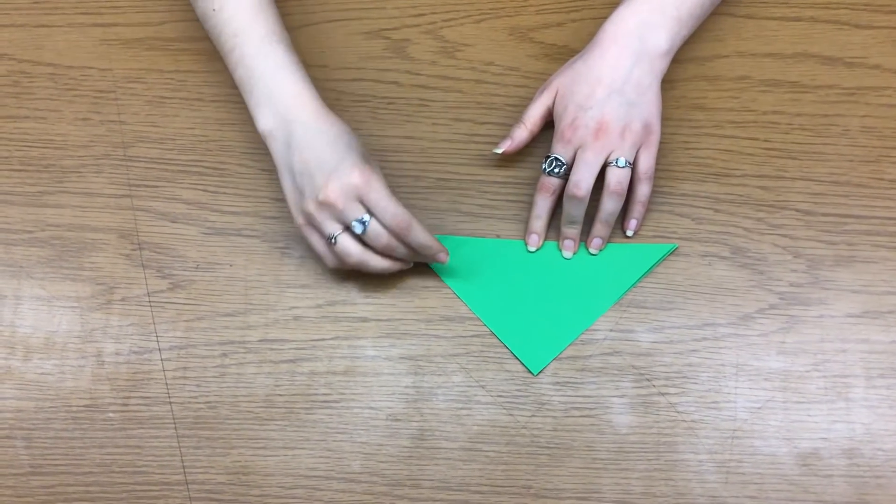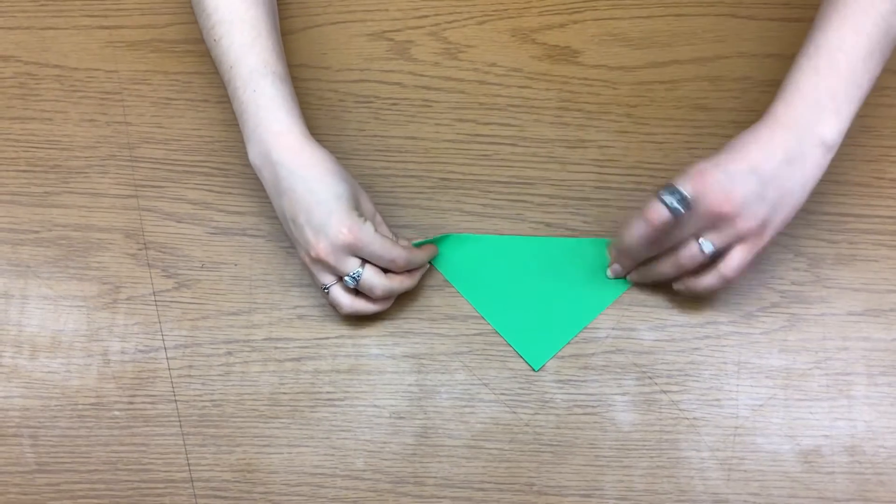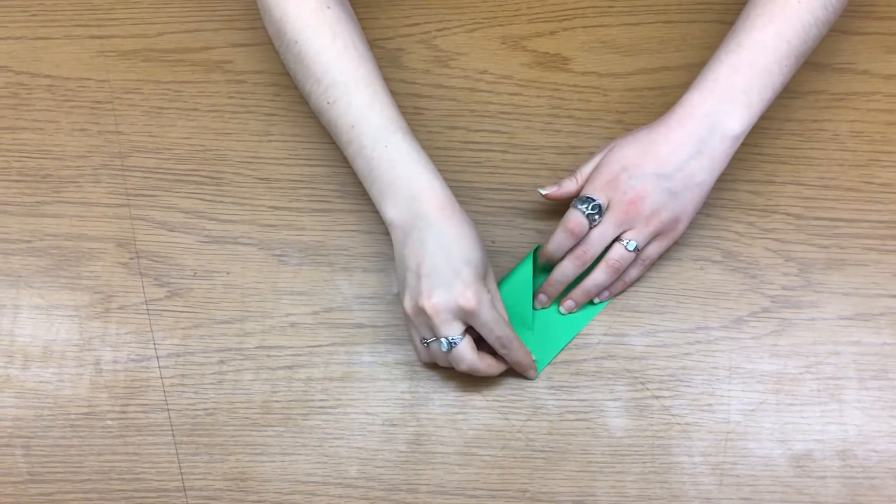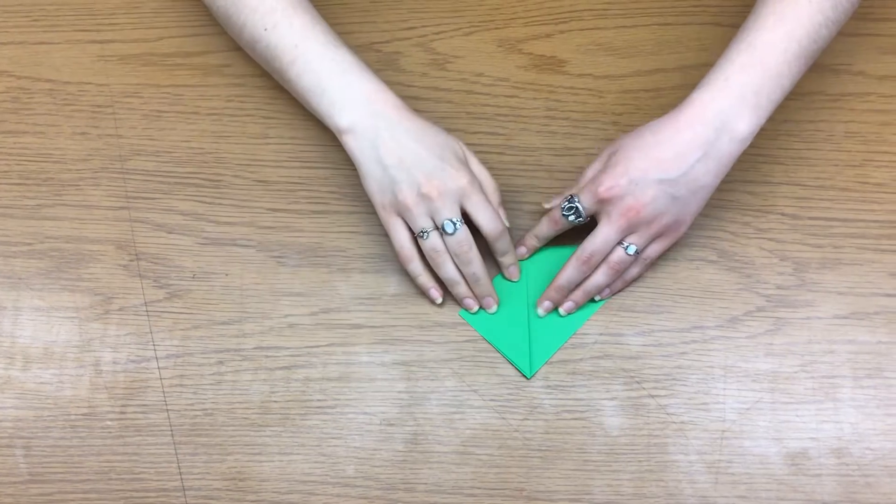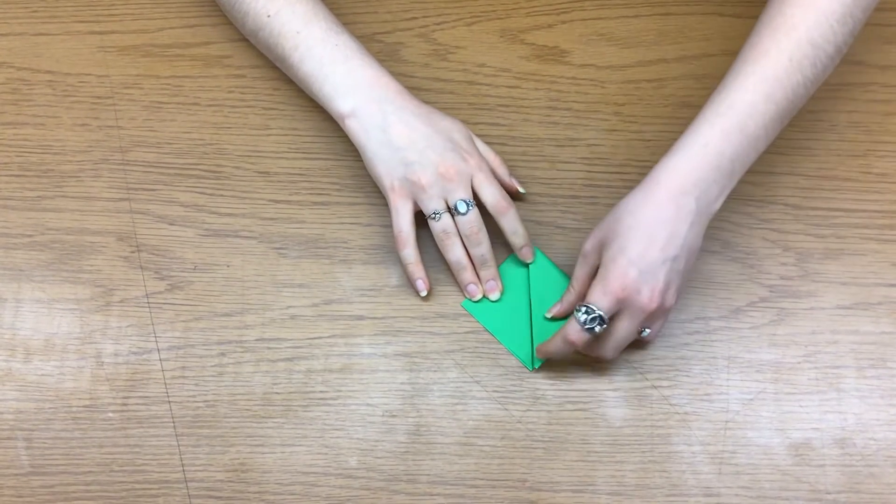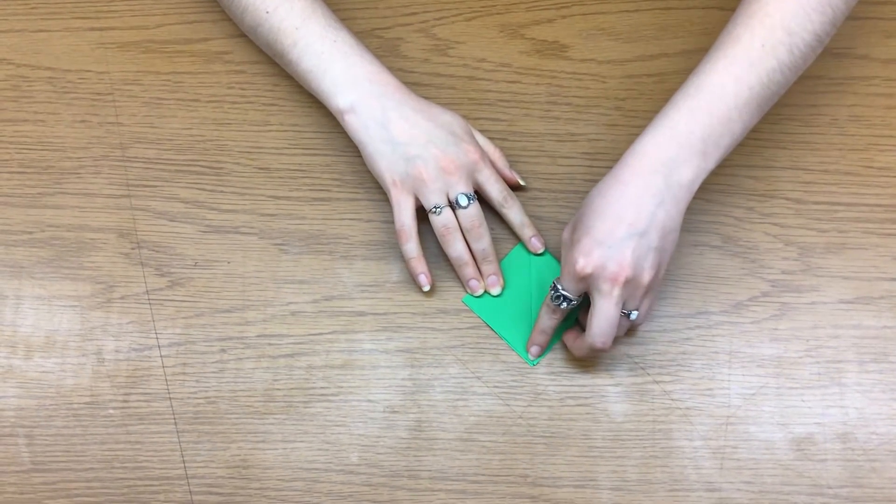Then we're going to take the long corners and fold them up again so that they touch and form a square once more.